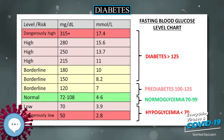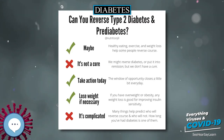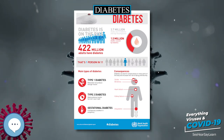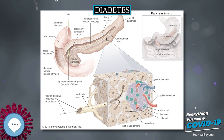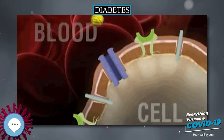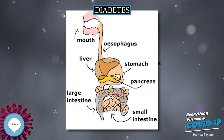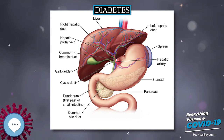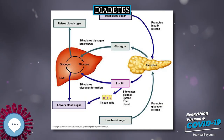Some medications for type 2 diabetes are available by mouth, such as metformin, while others are only available by injection such as GLP-1 agonists. Metformin is generally recommended as a first-line treatment for type 2 diabetes, as there is good evidence that it decreases mortality. It works by decreasing the liver's production of glucose. Several other groups of drugs may also decrease blood sugar in type 2 diabetes. These include agents that increase insulin release (sulfonylureas), agents that decrease absorption of sugar from the intestines (acarbose), agents that make the body more sensitive to insulin (thiazolidinediones), and agents that increase the excretion of glucose in the urine (SGLT2 inhibitors). When insulin is used in type 2 diabetes, a long-acting formulation is usually added initially while continuing oral medications, with doses increased to meet glucose targets.